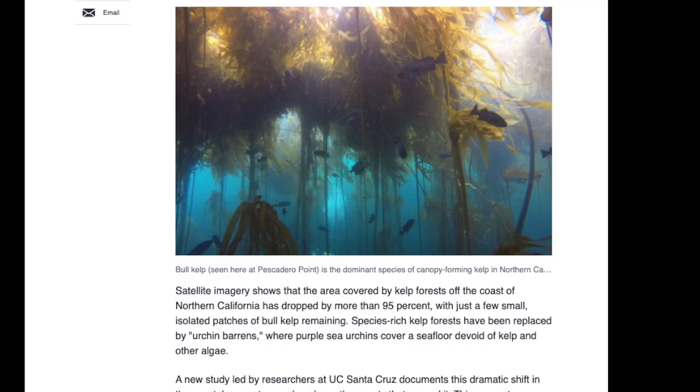A few lines from the paper at phys.org. The area covered by kelp forests off the coast of Northern California has dropped by more than 95 percent, which is huge. Species-rich kelp forests have been replaced by urchin barrens, where purple sea urchins cover a seafloor devoid of kelp and other algae.